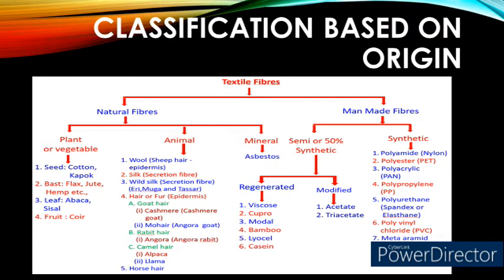Animal fiber. There are five different animal fibers. Number one — wool, extracted from sheep hair. Number two — silk, a secretion fiber. Number three — wild silk: examples are eri, muga, and tasar. Number four — hair or fur fibers. There are three different hair fibers. Number one — goat hair: example, Kashmiri, extracted from the Kashmiri goat.